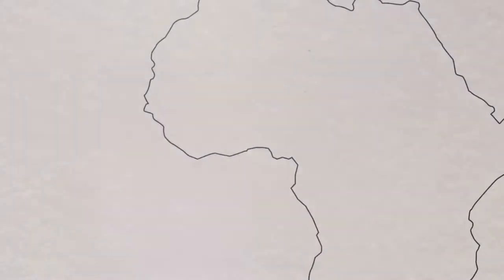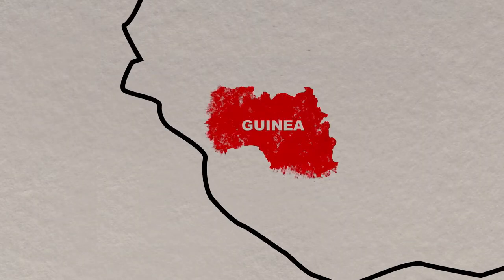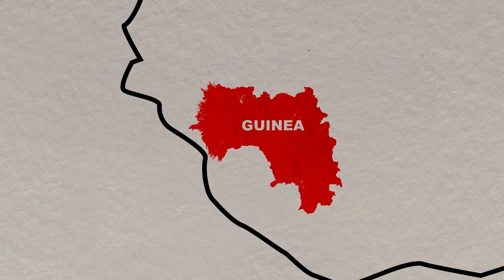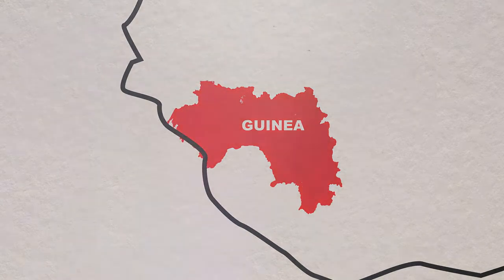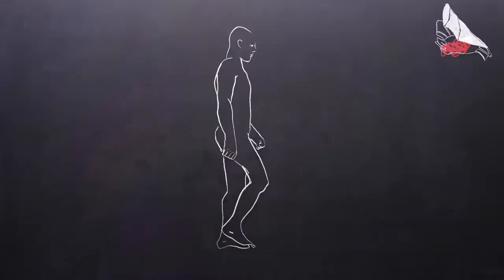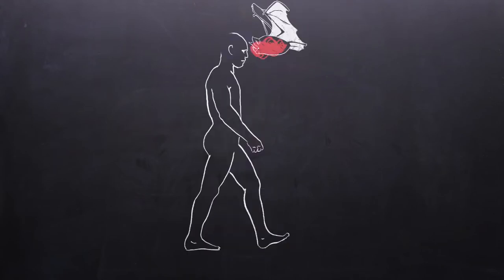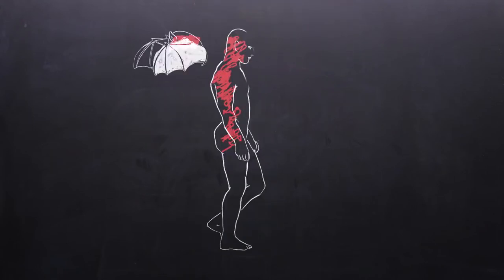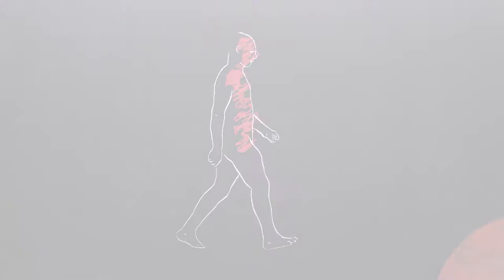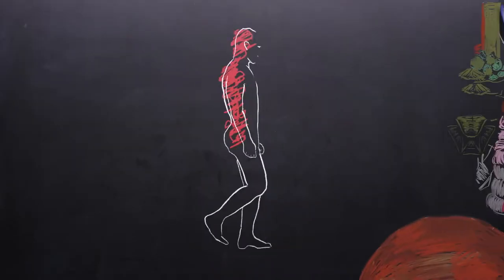The Ebola outbreak in West Africa is believed to have started sometime in late 2013, with cases coming up in a village in Guinea. The epidemic started when a bat came in contact with a human and the virus passed from that animal to the person. Ebola spreads through direct contact with body fluids of someone that's infected.